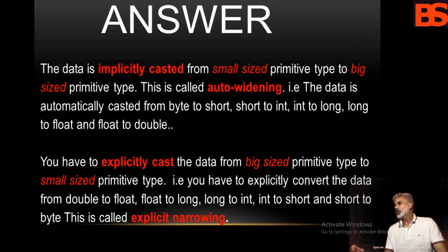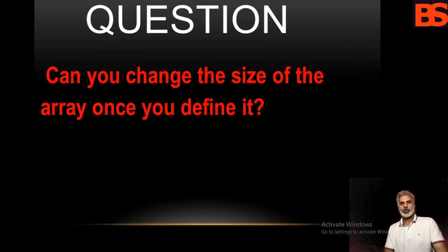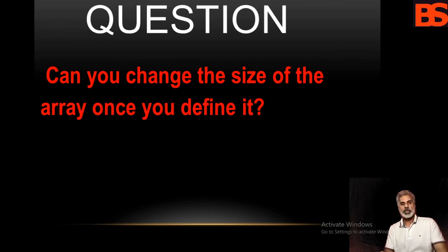Explicit narrowing means explicitly converting from double to float, float to long, long to int, int to short, short to byte. Today's question is: can you change the size of an array after you define it? Please give the answer in the comment section, otherwise I will tell you in the next lecture. I hope you enjoyed this lecture — I will see you in the next lecture.